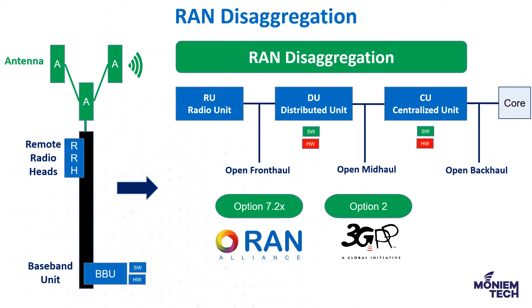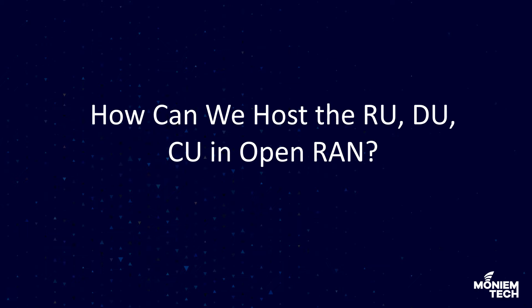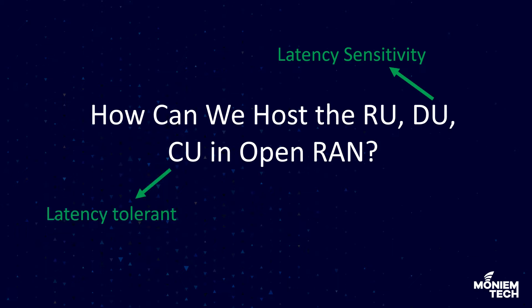So the question now is: how can we host the RU, DU, and CU in O-RAN or in V-RAN? Before answering that, let's address the difference between functions in the DU and CU. Generally, the DU hosts real-time, latency-sensitive functions like scheduling, while the CU hosts latency-tolerant functions like carrier aggregation.